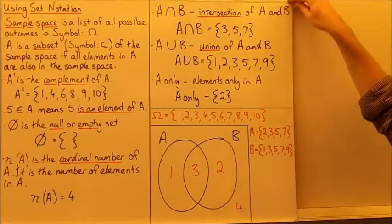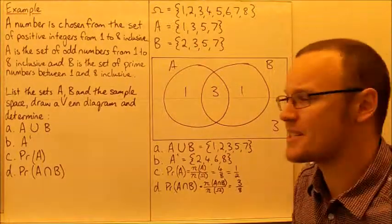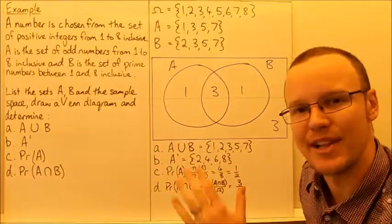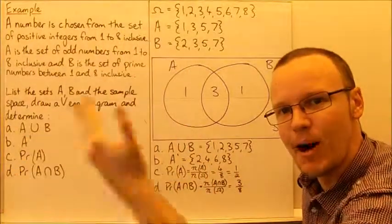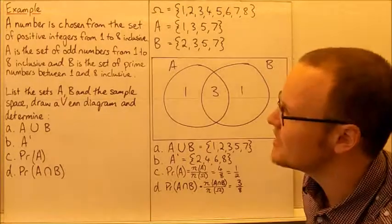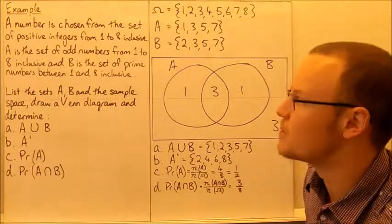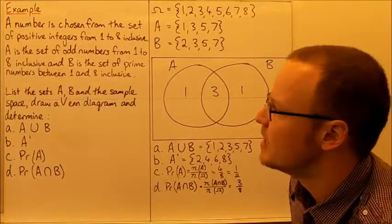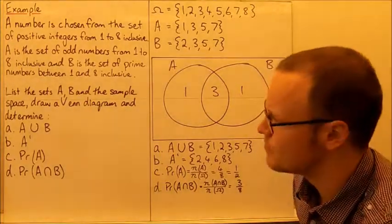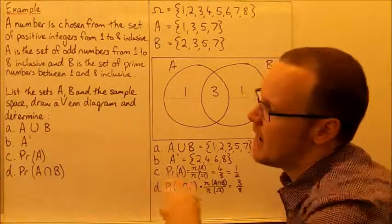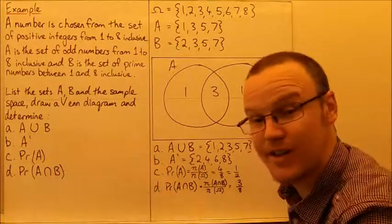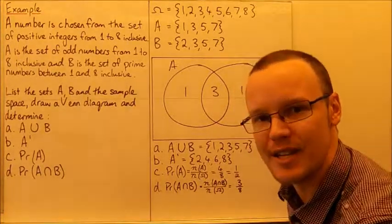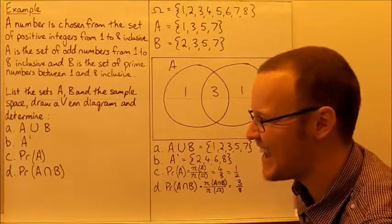Now for an example: a number is chosen from the set of positive integers from 1 to 8 inclusive — so the sample space is 1, 2, 3, 4, 5, 6, 7, 8. A is the set of odd numbers from 1 to 8 inclusive: 1, 3, 5, 7. B is the set of prime numbers: 2, 3, 5, and 7. We need to list the sets A and B in the sample space, draw a Venn diagram, then determine A union B, the complement of A, the probability of choosing a number from A, and the probability of choosing A intersection B.